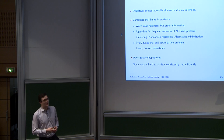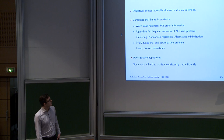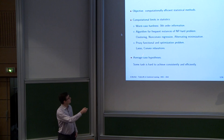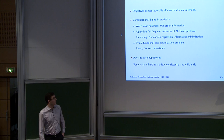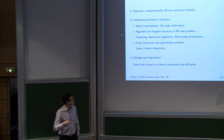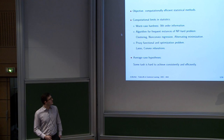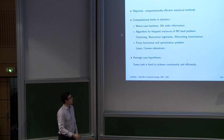What's also possible is we can create another optimization problem — a proxy functional optimization problem. This is what we're doing when we perform convex relaxations, or when we use the usual trick of transforming the L0 norm into an L1 norm. In order to say that something is going to be hard computationally from a statistical point of view, we have to focus on average-case hypotheses — not only worst-case hardness. We need to say that some task is hard to achieve consistently and efficiently.